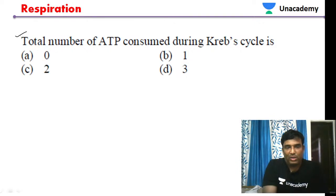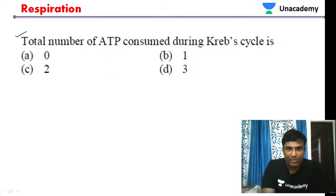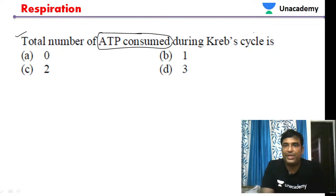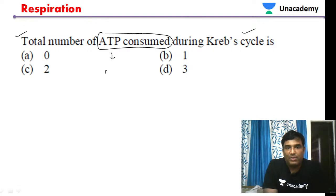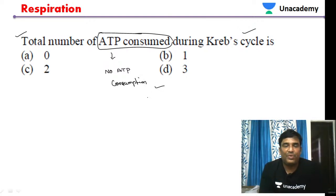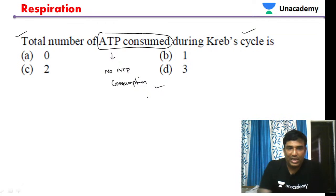MCQ: What is the total number of ATP consumed during the Krebs cycle? During the Krebs cycle, there is no ATP consumption. ATP is produced, not consumed. So the total number of ATP consumed during the Krebs cycle is zero — option A is the answer.